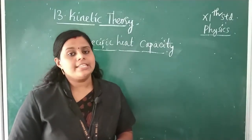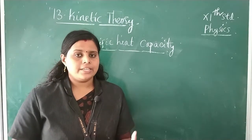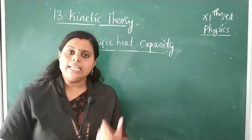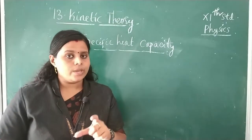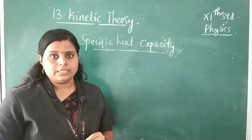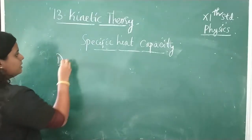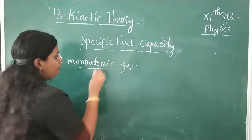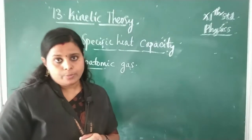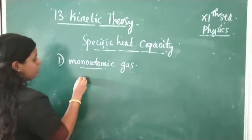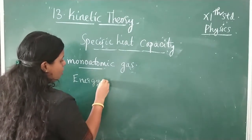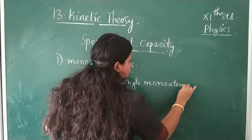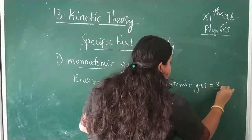Now let's discuss specific heat capacity for monoatomic, diatomic, and polyatomic gases. For a monoatomic gas, the energy of a single molecule is 3/2 K_BT. Multiplying by Avogadro's number N_A, and using K_B × N_A = R (universal gas constant), the internal energy U = 3/2 RT.